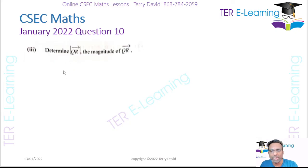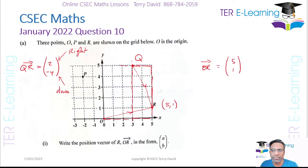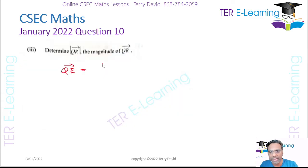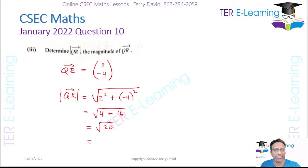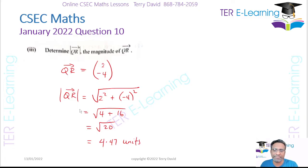The next thing they want is to determine the magnitude of QR. We were told QR = (2, -4), and to find the magnitude we use the formula: square root of (2² + (-4)²). That's the square root of (4 + 16), which is the square root of 20. Using a calculator, the square root of 20 is 4.47, so the magnitude of QR is 4.47 units.